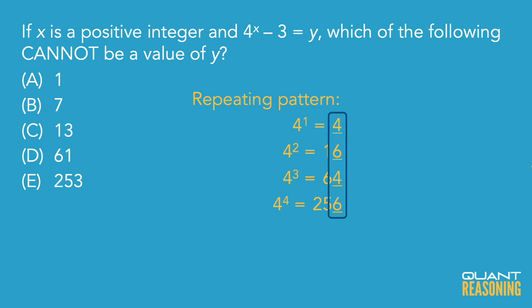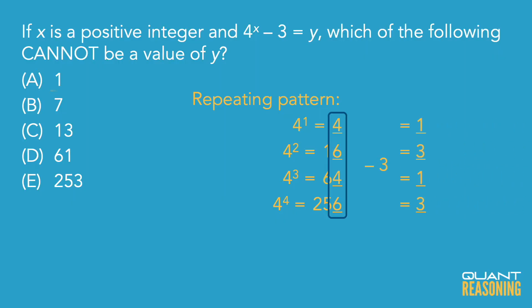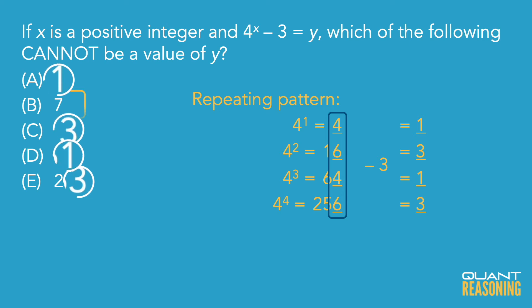So we have 4, 6, 4, 6, 4, 6, 4, 6. We can make the connection that if the exponent is odd, then the units digit will be 4, and if the exponent is even, then the units digit will be 6. So understanding that the units digit has to be either 4 or 6 for any positive integer value of x, we can see that subtracting 3 from that units digit — whether it's 4 or 6 — would lead to 1 or 3 respectively. We can just pick the answer choice that doesn't have a units digit of 1 or 3. In this case, that's answer choice B.